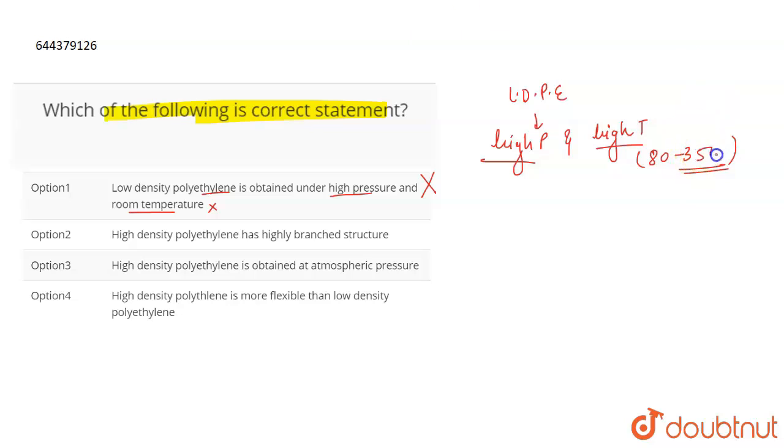Now if we talk about the second statement, it says that high density polyethylene has a highly branched structure. This is incorrect. It has a very low degree branching. It is not at all a highly branched structure. LDPE is a highly branched structure, HDPE is not.